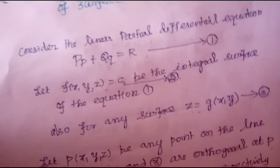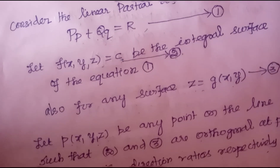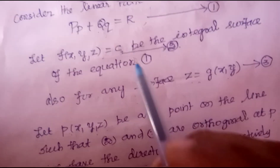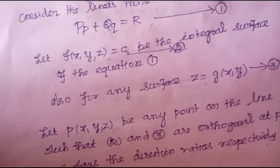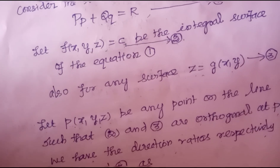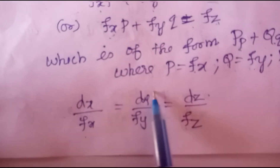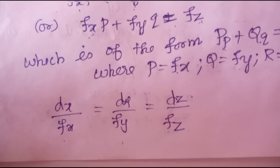So the surfaces orthogonal to the system — equation 2 — are the surfaces generated by the integral curves of the equation dx/fx = dy/fy = dz/fz. Do you understand? Now go to the next problem.